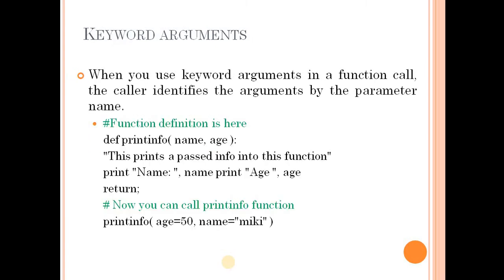The next type is keyword arguments. When you use keyword arguments in a function call, the caller identifies the arguments by the parameter name. For example, in the function definition we have name and age as parameters, and in the function call we use keyword arguments like name='Mickey', age=50.